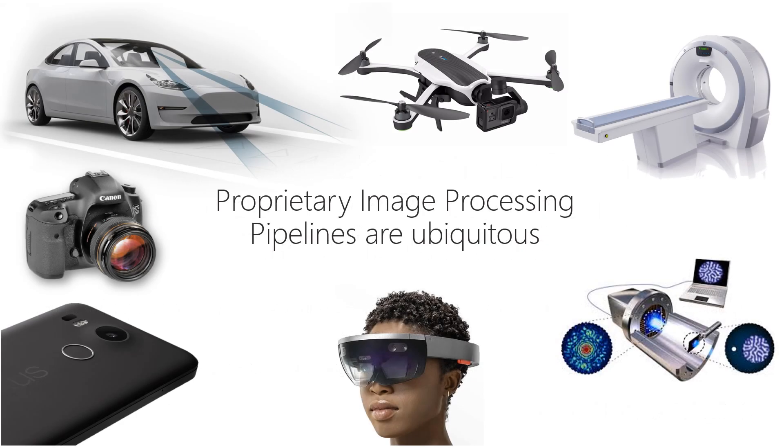Today we are surrounded by imaging systems in our own personal phones, vehicles, and scientific applications. Nearly every commodity imaging system we directly interact with or indirectly rely on either uses black box hardware image signal processing units known as ISPs or proprietary software.